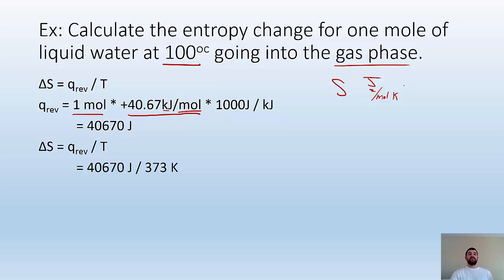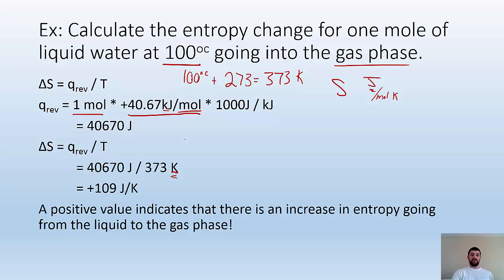Entropy is typically given in joules per mole Kelvin, so we want to end up with joules. I do that and I get 40,670 joules. Now I'm going to plug that into my equation. 40,670 joules divided by 373 Kelvin. Because if I got 100 degrees Celsius and I need Kelvin, I need to add 273 to it. And that's where I get the 373 Kelvin from. Now I just plug and chug and I get 109 joules per Kelvin. A positive value indicates there's an increase in entropy going from liquid to the gas phase.